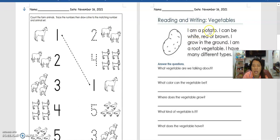I will read it one more time. I am a potato. I can be white, red, or brown. I grow in the ground. I am a root vegetable. I have many different types.